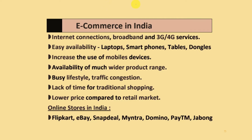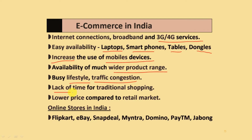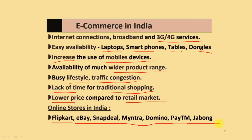E-commerce in India: internet connections, broadband, 3G, 4G, and 5G services are available in Indian rural areas. Easy availability of laptops, smartphones, tablets, dongles, and Wi-Fi has increased mobile device use. There is availability of a much wider range of products, busy lifestyles, traffic, lack of time for traditional shopping, and lower prices compared to the retail market. Online stores available in India include Flipkart, eBay, Snapdeal, Myntra, Domino's, Paytm, Jabong, and many others.